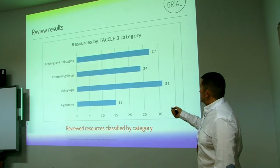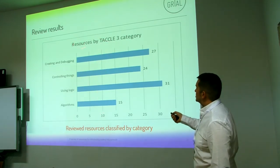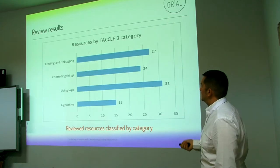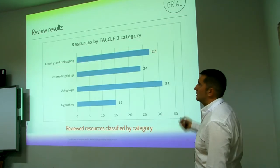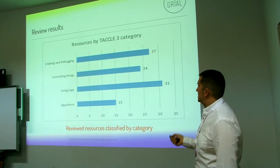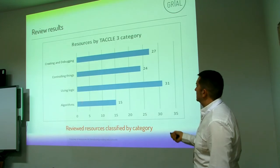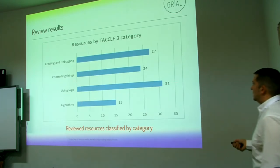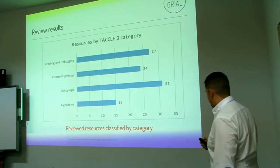Resources are classified by the main categories: Creating and programming — 27, Controlling things — 24, Using logic — 31, Algorithms — 15.